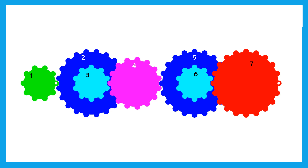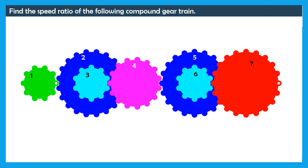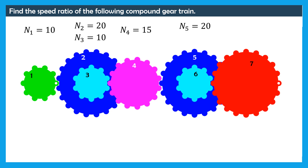In this problem, we are asked to determine the speed ratio of the following compound gear train, knowing that: the number of teeth in the first gear is 10, the second gear is 20, the third gear is 10, the fourth gear is 15, the fifth gear is 20, the sixth gear is 10, and the seventh gear is 20.